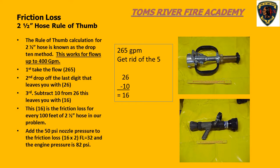As with all rules of thumb, there are limitations. This method is only good up to 400 gallons per minute. Just understand that if we are using 2.5-inch hose as a hand line, our flows are never greater than 325 to 350 gallons per minute.